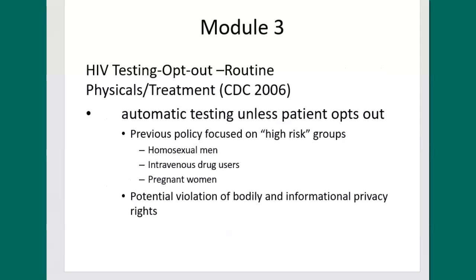HIV testing is generally administered using an opt-out provision during the course of routine physicals and treatment. Previously, the policy was more focused on high-risk groups — gay men, intravenous drug users, and pregnant women. The potential violation of bodily and informational privacy guaranteed by the substantive due process clause of the Fifth and Fourteenth Amendments comes into play here.